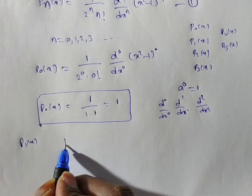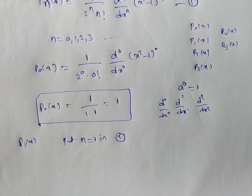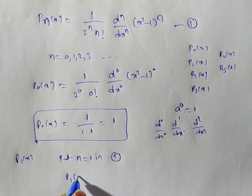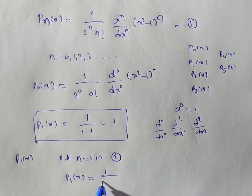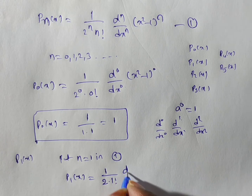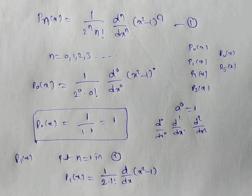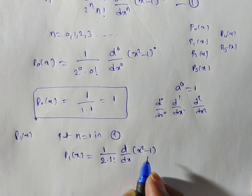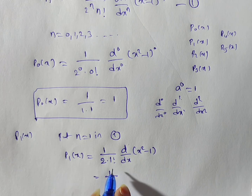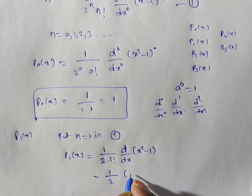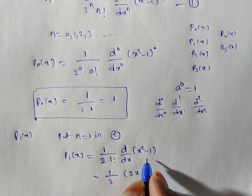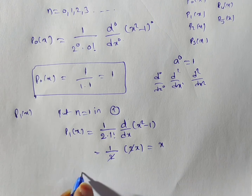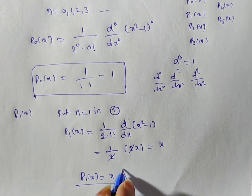Now for P1(x), put n equal to 1 in the Rodrigues' formula. Then P1(x) is equal to 1 by 2 to the power 1, which is 2, into 1 factorial, into d by dx of (x squared minus 1) to the power 1. Here we differentiate one time: the derivative of x squared minus 1 is 2x, and the constant term gives 0. So 1 by 2 into 1 factorial — that is 2 into 1 equals 2. The 2 in numerator and denominator cancel, giving P1(x) equal to x.